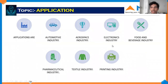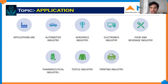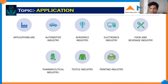The applications of SPM machines include the automotive industry, where they are used for assembly and painting. In the aerospace industry, high precision is required, so SPM machines are used. In the electronics industry, they are mainly used for PCB assembly. They are also used in the pharmaceutical, textile, and printing industries, mainly for sorting and segregating items according to their needs.